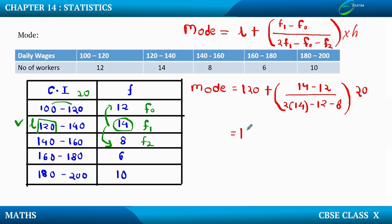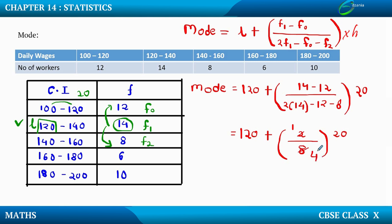So we have 120 plus: 14 minus 12 is 2; 2 into 14 is 28, minus 12 minus 8 gives 8 in the denominator; 2 divided by 8 into 20 gives 5. So we have 120 plus 5, that is 125. So MODE is 125 rupees.